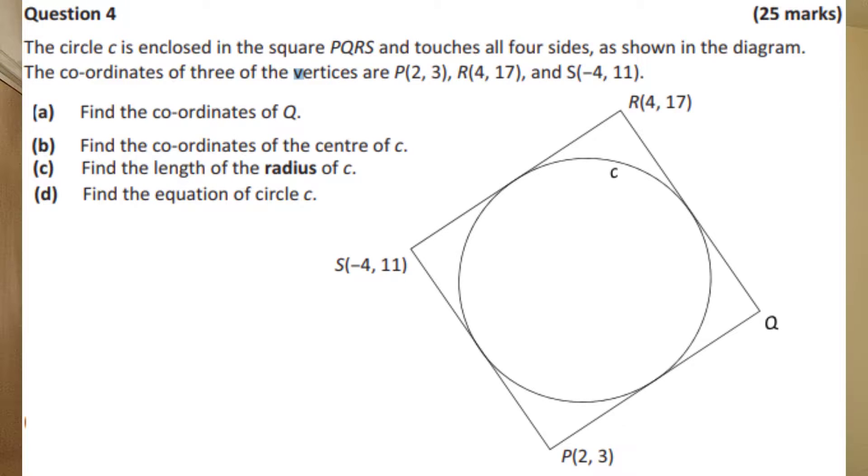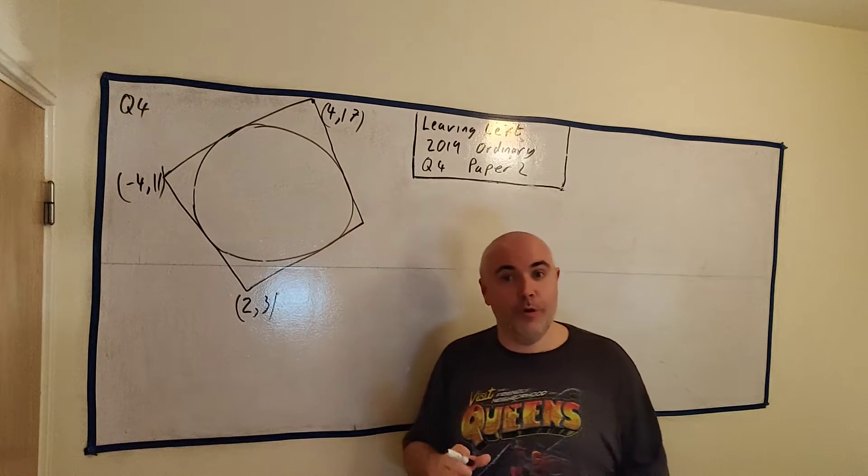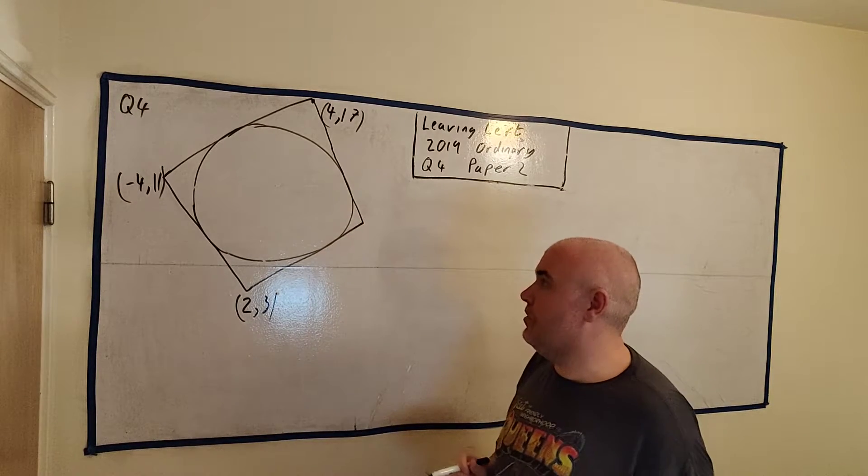This is question 4 of the 2019 Ordinary Level Leaving Certificate paper. You can find a link to an image of this question in the description below. As you can see, it's a question with a square and a circle inside it, but it's all about coordinate geometry. I've done my best to draw a circle and a square on the board, hopefully it's accurate enough for us to use.